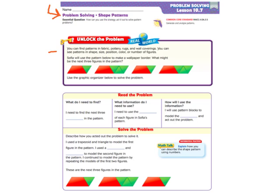So let's unlock the problem. You can find patterns in fabric, pottery, rugs, and wall coverings. You can see patterns in shape, size, position, color, or number of figures. Sophia will use the pattern below to make a wallpaper border. What might be the next three figures in the pattern?